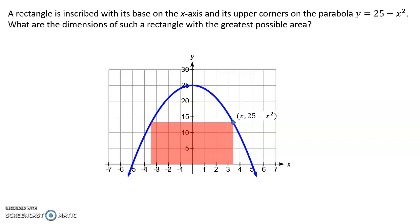So let's see if we can figure out the dimensions of this rectangle. We know that that distance is x because that's where the x coordinate is. And because of the symmetry then, the whole width of the rectangle is going to be 2x. Likewise, the height of the rectangle is given by the y coordinate of that upper right corner where it touches the curve. So the height is 25 minus x squared.